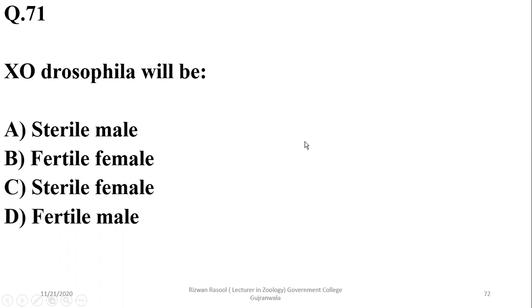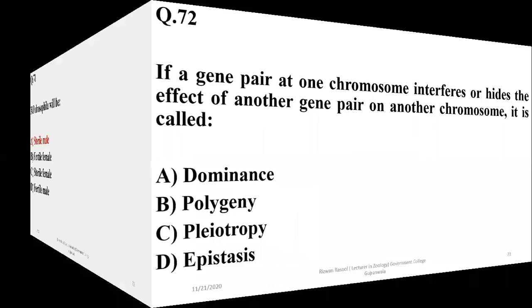XO in Drosophila — these are actually sterile males in the case of Drosophila. However, in the case of humans, XO individuals are cases of Turner syndrome, which are sterile females.